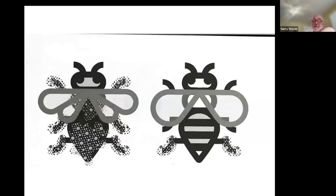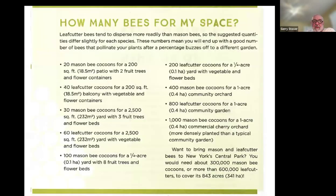This slide is from Dave Hunter's book from Crown Bee, and it illustrates that a solitary bee carries pollen on its whole body, whereas a honeybee only puts pollen on its legs. That's a key visual distinction showing why solitary bees are such effective pollinators.